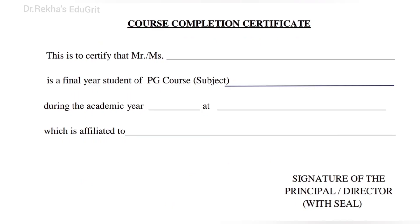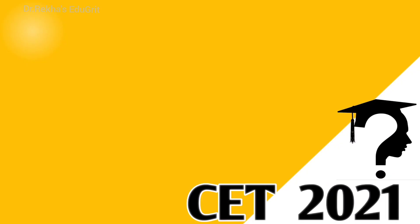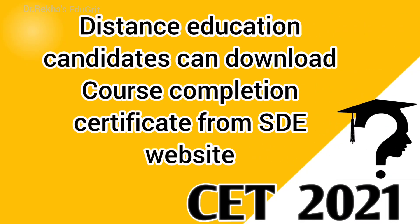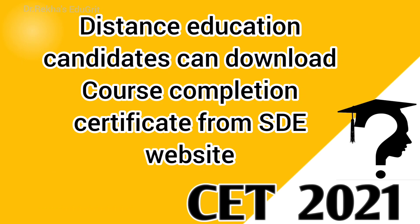Next, I am sharing the format of the course completion certificate, which is for students studying in the final year. Candidates who completed PG through distance education can also apply. If they have not received a professional certificate or mark statement, they can obtain a course completion certificate from the distance education website and apply for the exam.